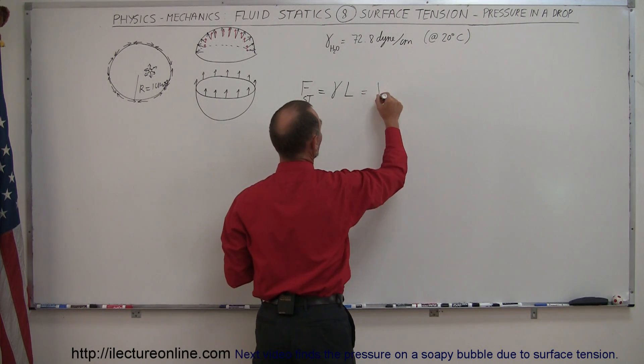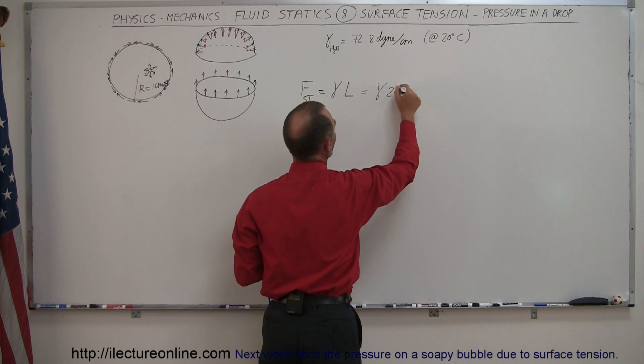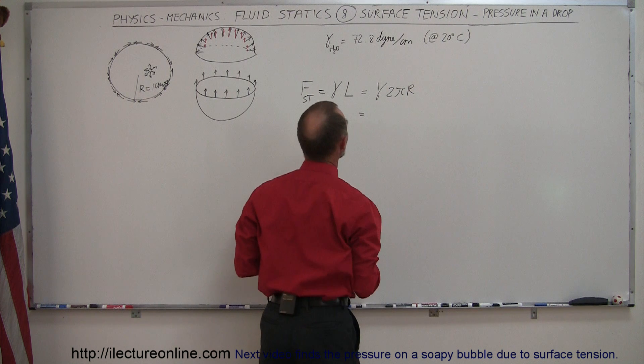So the force of surface tension can then be figured out by taking the coefficient times the length around the rim. That would of course be 2π times the radius. So we can say that's equal to the surface tension times 2πr. And let's find out what that is equal to.